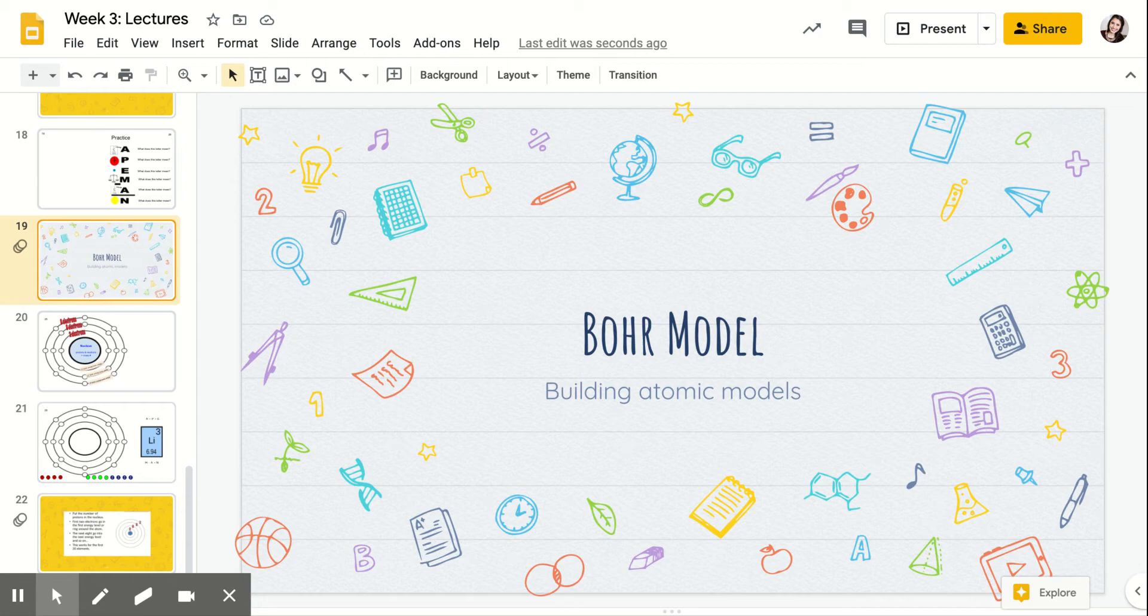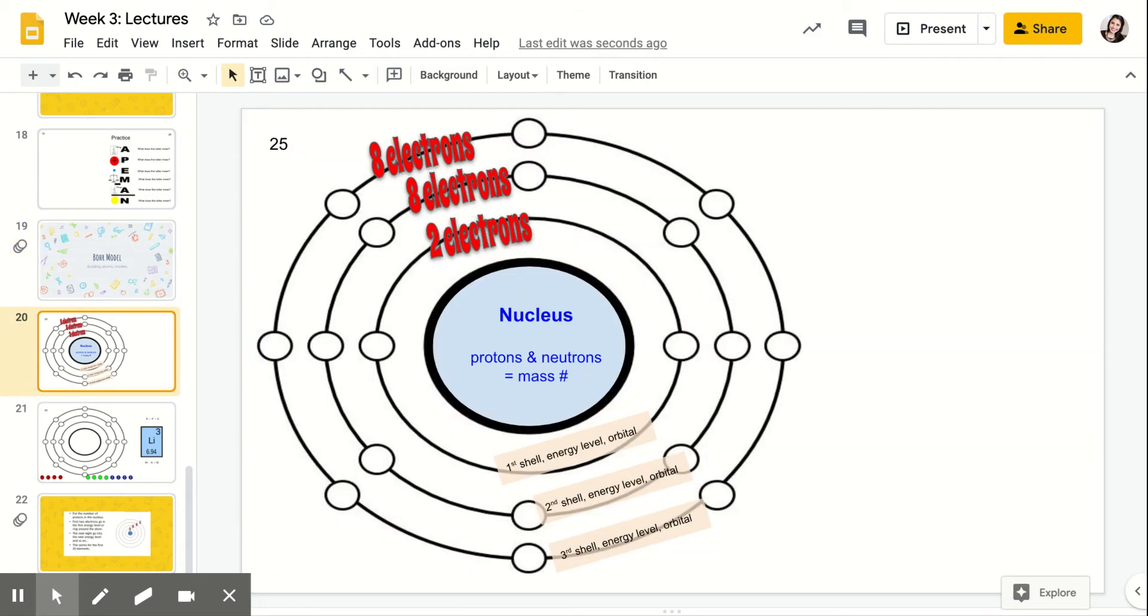So we're going to be taking what we learned yesterday with ape man and then now we're going to be using that information to build a model. Now, there are rules to build this model. In the center, this is the nucleus and in the nucleus you'll find protons and neutrons. And remember when you add those you get the mass number. So the first thing you're always going to do is you're going to fill in the nucleus. You're always going to start from this inside area, always, always, always.